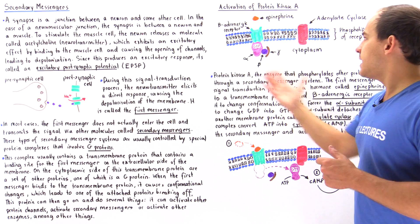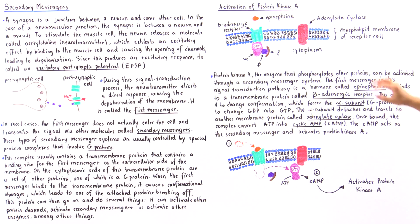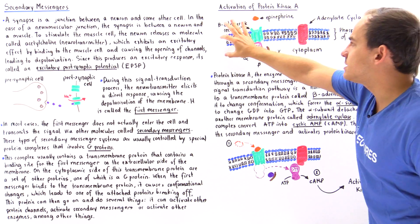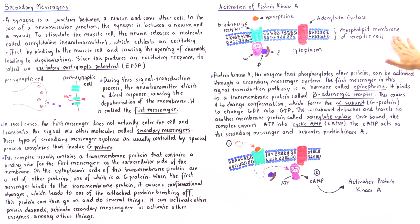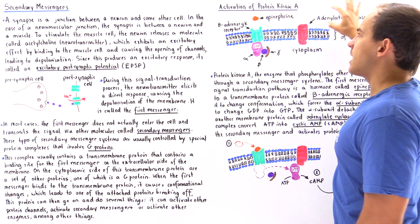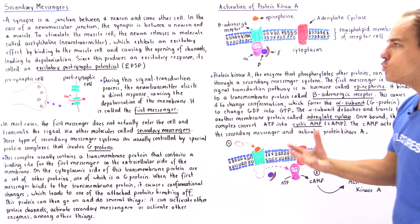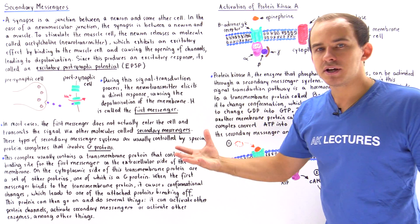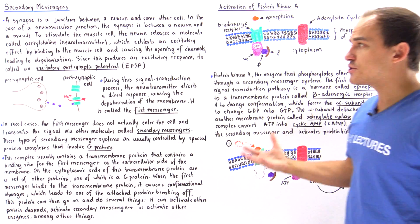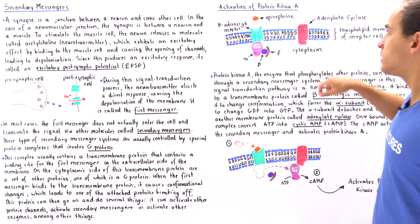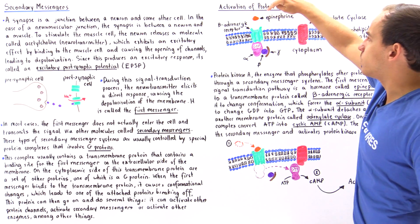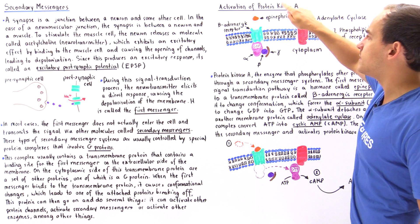Looking at the diagram: this is the cytoplasm of our cell, this is the phospholipid bilayer membrane of the receptor cell, and this is the extracellular environment. The primary messenger is typically a neurotransmitter or hormone — in this case, the hormone epinephrine.